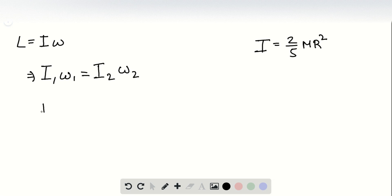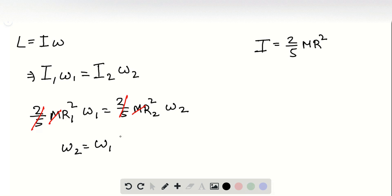So we can write 2 over 5 m r1 squared, which is equal to 2 over 5 m r2 squared times omega 2. We can get rid of this part, and then we'll have omega 2, which we need to figure out, which is equal to omega 1 times r1 by r2 squared.